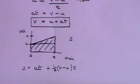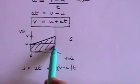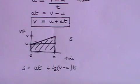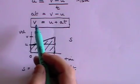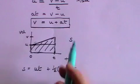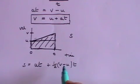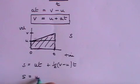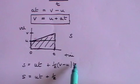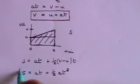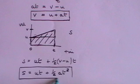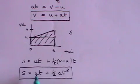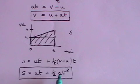The distance s is the area under the curve — that rectangle plus that triangle. Since v minus u equals at, we substitute to get s equals ut plus one half at squared. That's our second major formula: the distance traveled is the initial velocity times time plus half the acceleration times time squared.